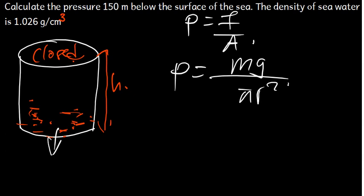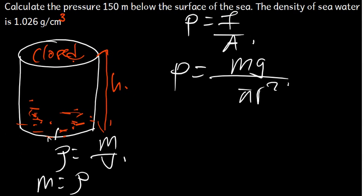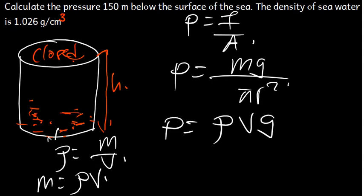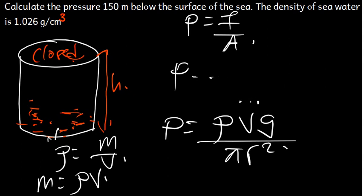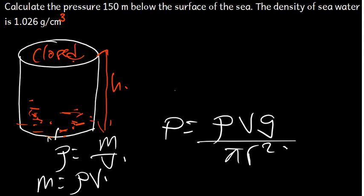Now let's talk about the mass of the water. We know that density is given by mass divided by volume. To find the mass, mass equals density times volume. So where there is mass, I'm going to put density times volume. So pressure is going to be equal to density times volume times g, divided by pi r squared.